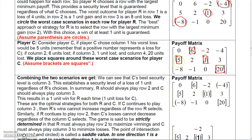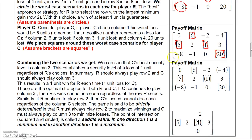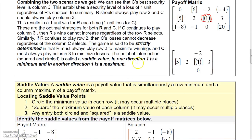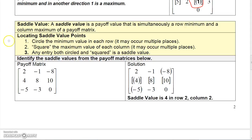A positive value means R gains money; a negative value means R loses money and therefore C gains. Looking at all the brackets (squares) and parentheses (circles), there's an overlap at the value one — this overlap is called a saddle value. It optimizes both players simultaneously: in one direction one is a minimum, and in the other direction one is a maximum.